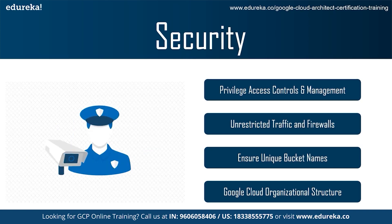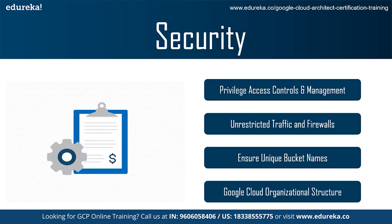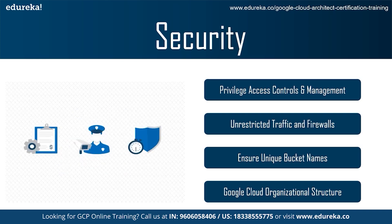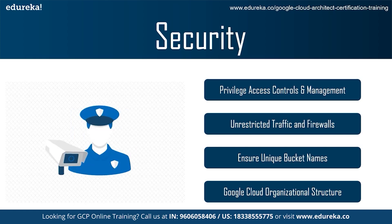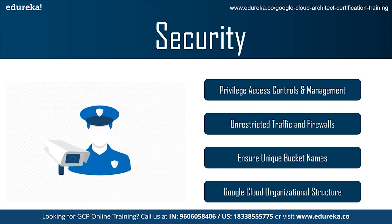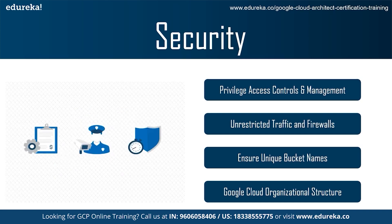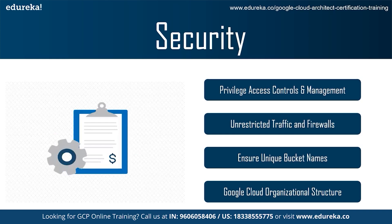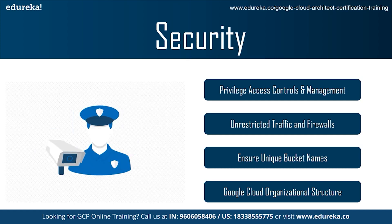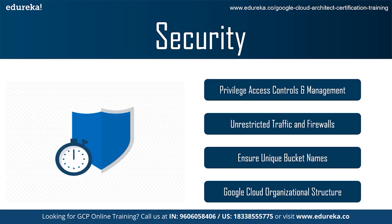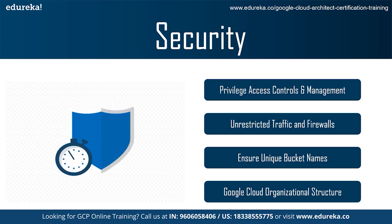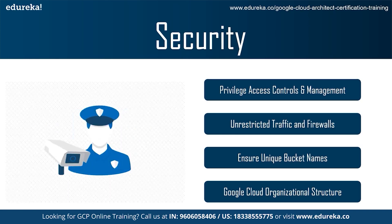The third security practice is to ensure your bucket names are unique across the whole platform. It is recommended to append random characters to the bucket name and not include the company name in it — this makes it harder for an attacker to locate buckets in a targeted attack. Fourth is to set up a Google Cloud organizational structure. Planning out how you want to organize your units and hierarchy before diving in will help you save time and create a more structured security strategy.